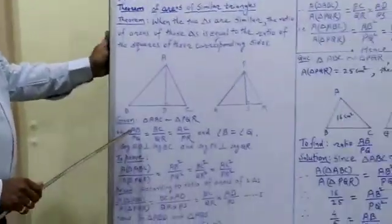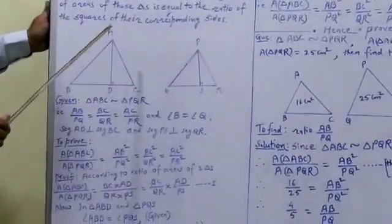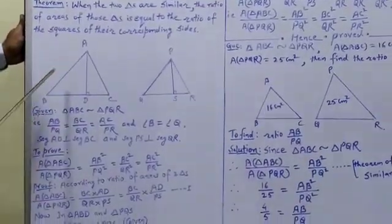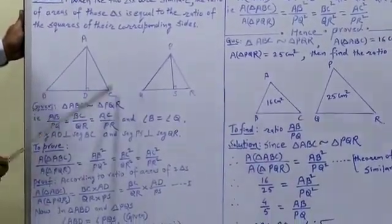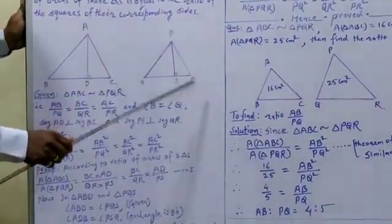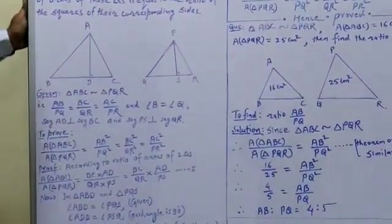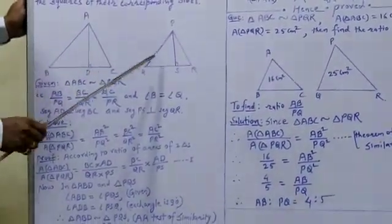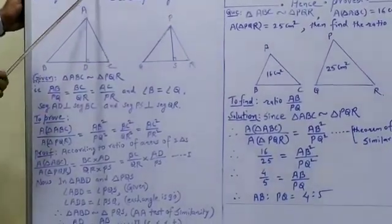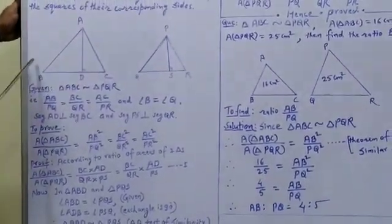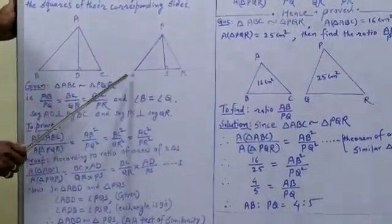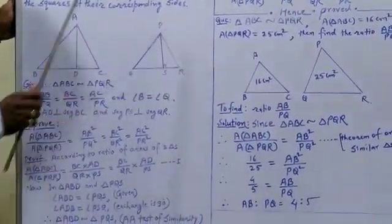So here, AB upon PQ equals BC upon QR equals AC upon PR, and angle B equals angle Q. Also, segment AD is perpendicular to segment BC, and segment PS is perpendicular to segment QR.